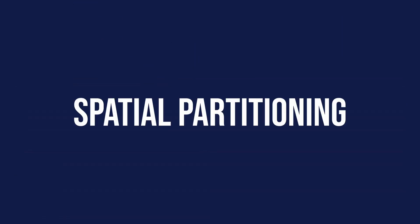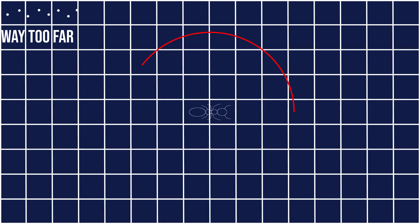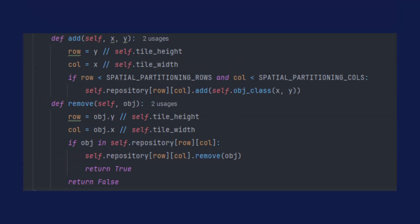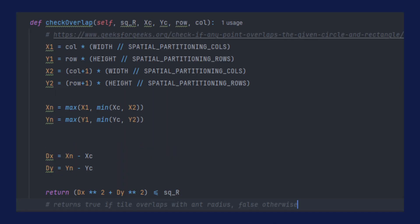The last idea is spatial partitioning, which requires a little more work. We can split the plane into many smaller tiles and check only the tiles that are within the detectable range. To implement this I need a manager class that serves as a middleman between ants and objects, with add and remove methods used by ants. To figure out which tiles are relevant for a given ant, I use a function from GeeksforGeeks that checks whether a tile is within the detection radius of the ant.